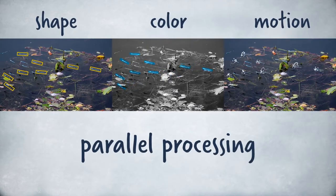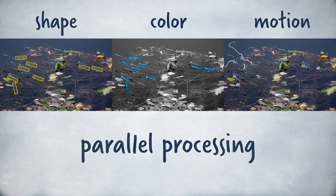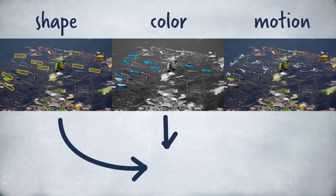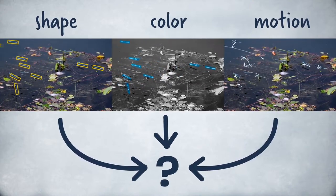But detecting features separately means the information must then be recombined to guide behavior. How does this recombination occur?